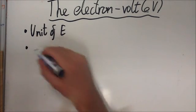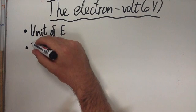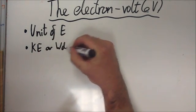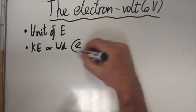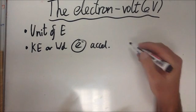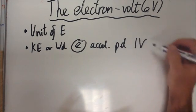Now the definition of an electron volt is the amount of kinetic energy gained by or the work done on an electron when it is accelerated through a potential difference of one volt.